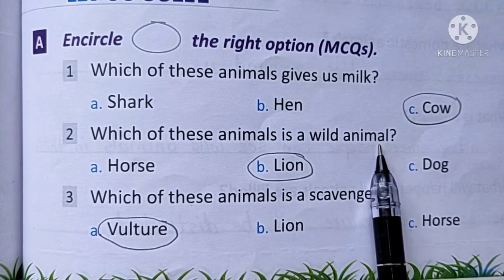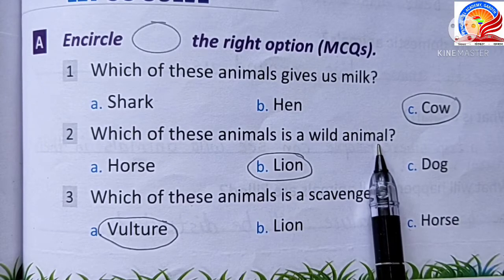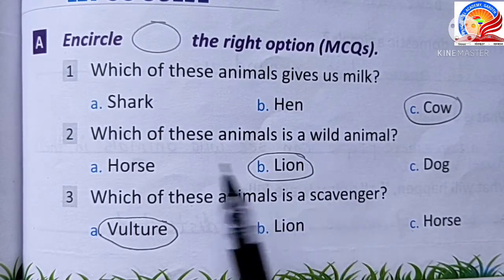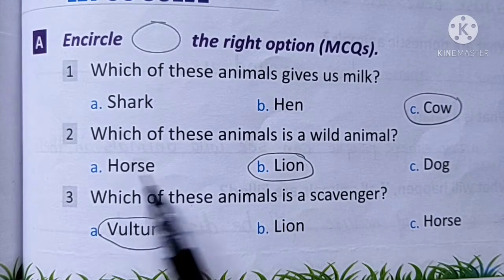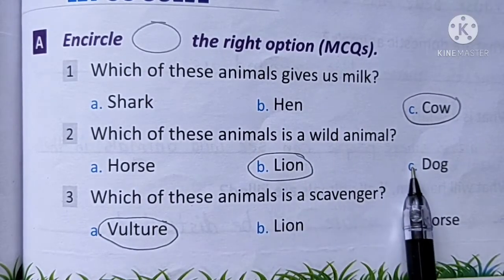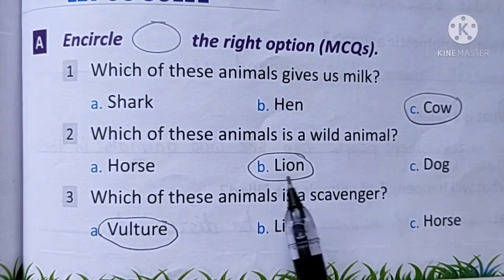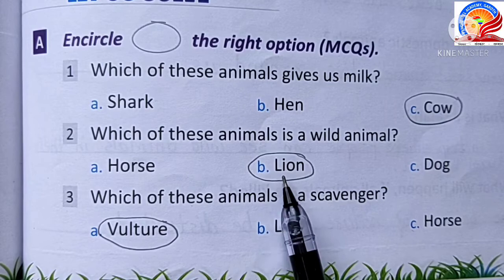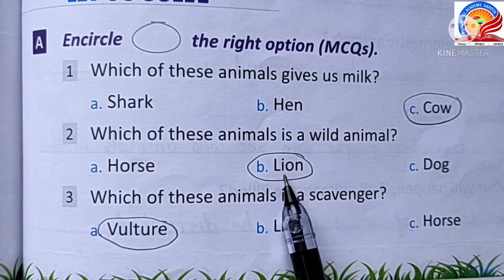Which of these animals is a wild animal? Options: horse, lion, dog. Wild means jungle animal. The answer is lion — lion is a wild animal.